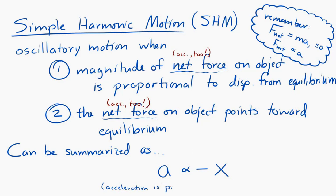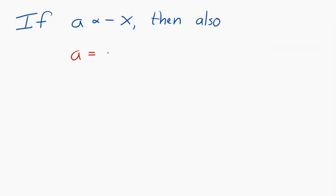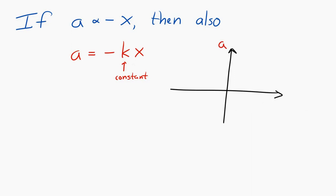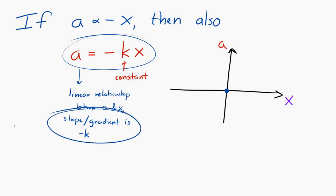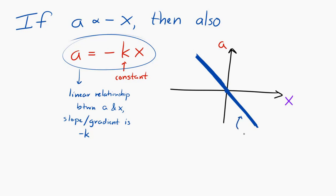We can write this as A = −kx, where k is some constant. Think about what the graph of acceleration versus displacement would look like: A and x are linearly related, with a y-intercept of zero. If we plot A versus x, it passes through the origin, and the slope of the graph is −k — a negative slope. So we get a negative-slope linear graph through the origin.